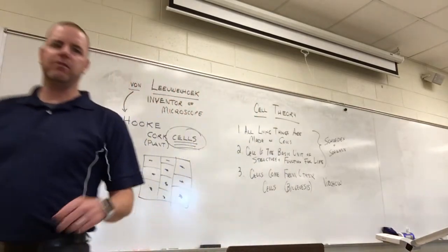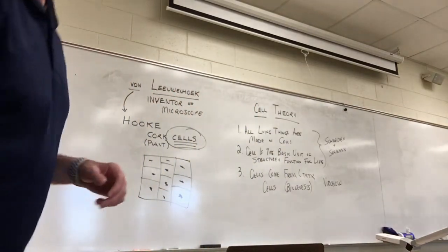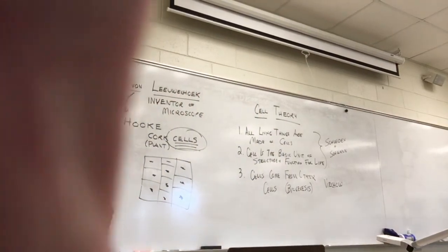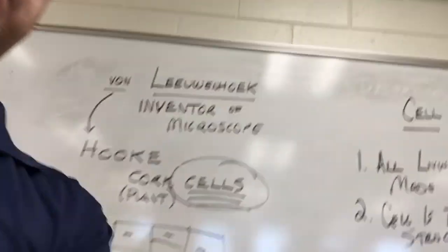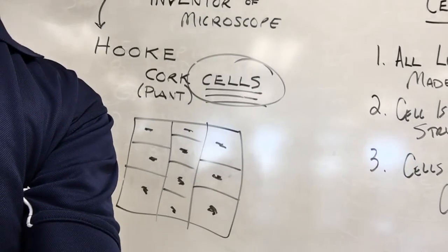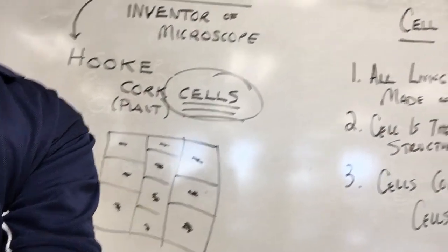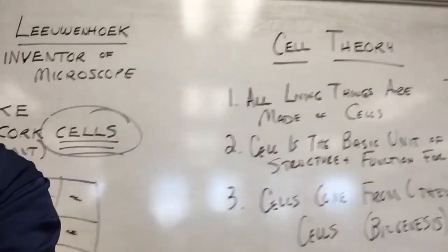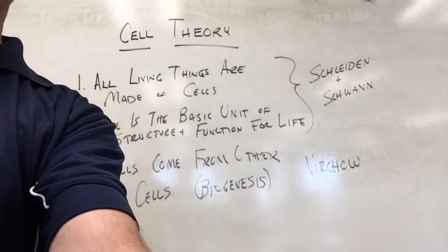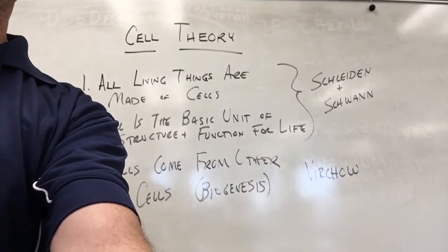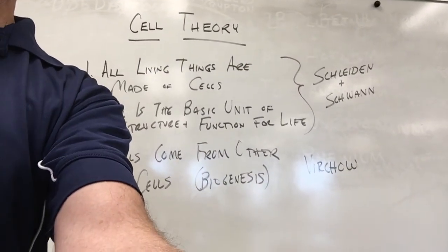That's the short version of von Leeuwenhoek's venture, the cell, Hooke, cork, and plant cells, and the idea of cell theory: all living things are made of cells; cells are the basic units of structure and function in life; and cells come from other cells - Schleiden and Schwann, and Virchow.